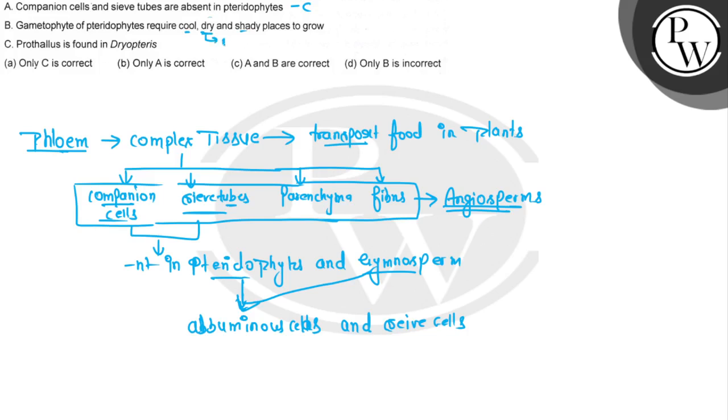Prothalus is found in dryopteris - this is correct. Dryopteris is a pteridophyte which has a reduced gametophyte called prothalus. So statement C is correct.